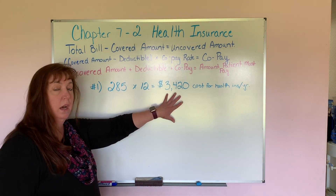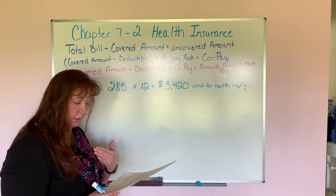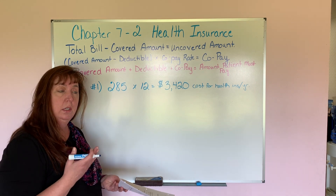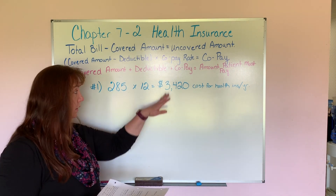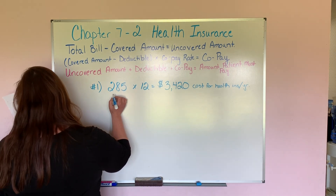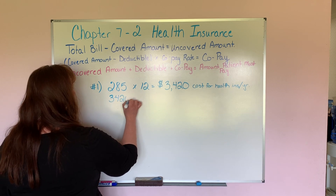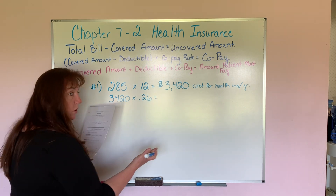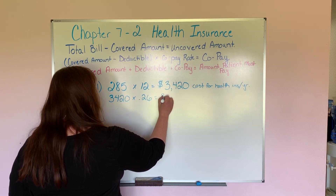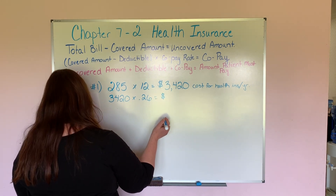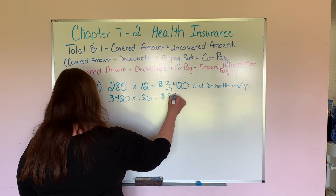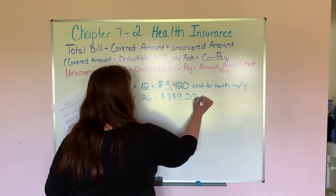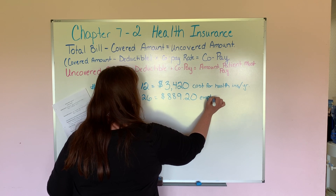Now we want to know just how much Leela pays. Let's figure out first how much the employer pays and then subtract that to find the difference. We've got $3,420 for the year times 26% (or 0.26 in your calculator). The employer pays $889.20 — that is the employer's part.